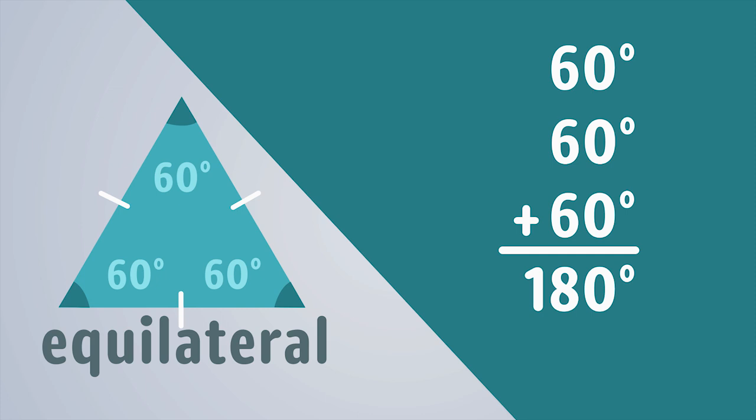When you add the measurements of each angle in a triangle, you will always have a total of 180 degrees.